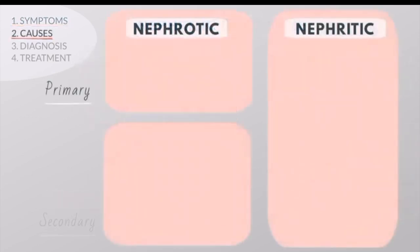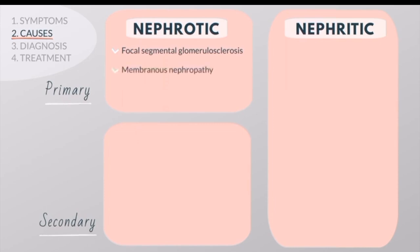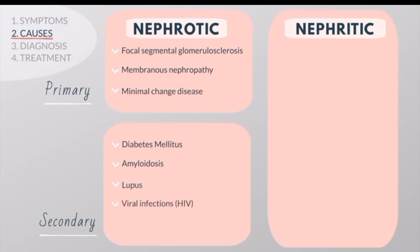Nephrotic syndrome can be primary or secondary. The most common primary causes of Nephrotic syndrome include focal segmental glomerulosclerosis, membranous nephropathy, and minimal change disease. The most common secondary causes include diabetes, amyloidosis, lupus, and viral infections such as HIV. A number of drugs that are toxic to the kidney can also cause Nephrotic syndrome, including anti-inflammatory drugs.